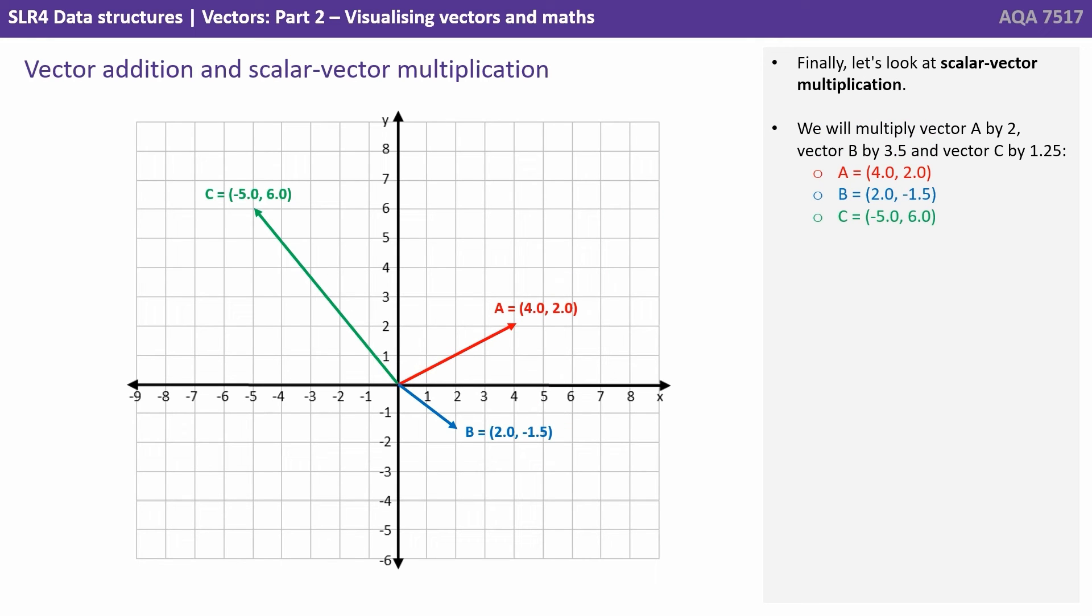Finally, let's look at scalar vector multiplication. We will multiply vector A by 2, vector B by 3.5, and vector C by 1.25.